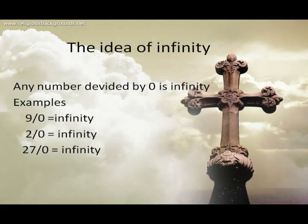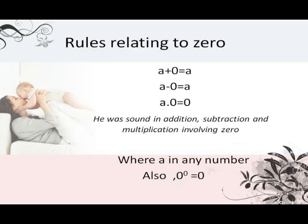Regarding the infinite rule, Bhaskaracharya, for the first time, broached the idea of infinity while dividing a number by zero. On zero rules, he was sound in addition, subtraction, and multiplication involving zero, but realized there were problems with Brahmagupta's idea of dividing by zero. He established: A plus zero equals A, A minus zero equals A, A times zero equals zero. He also understood that the equation X squared equals A can have two solutions.